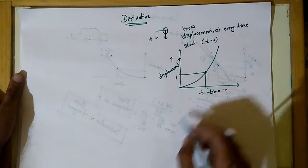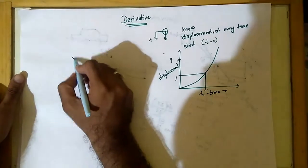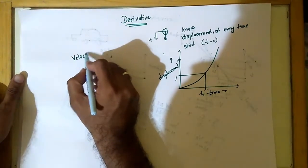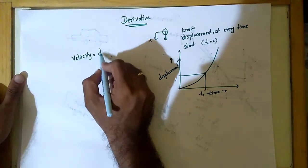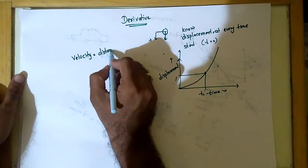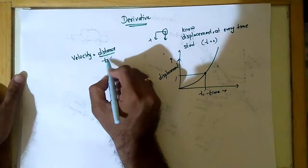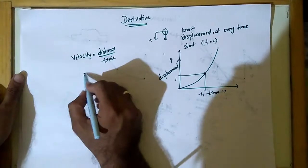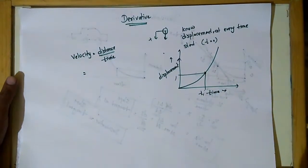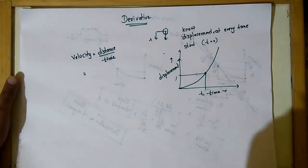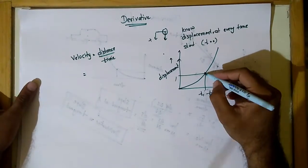Now I want to calculate velocity. Basically we know velocity is equal to distance by time. This is basically velocity. Now which distance should I take and what time should I take?